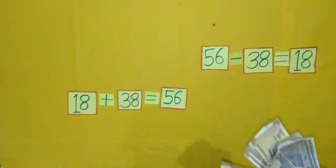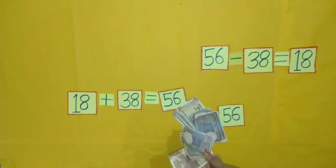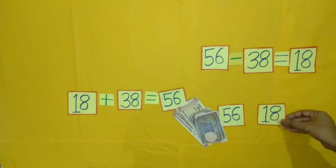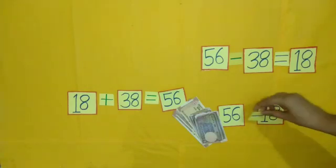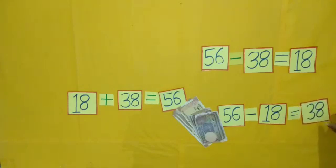Now, if I take rupees 18 from rupees 56, the money again becomes less. By subtracting rupees 18 from rupees 56, how much money is left? Yes, rupees 38.